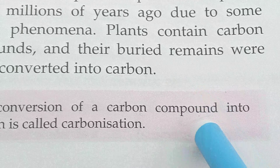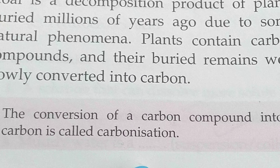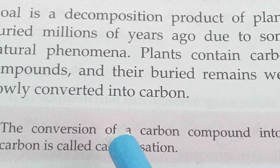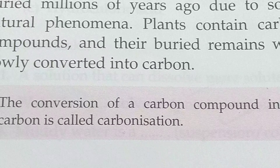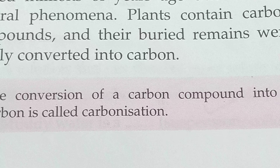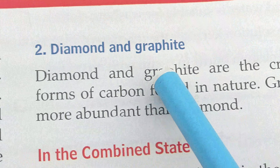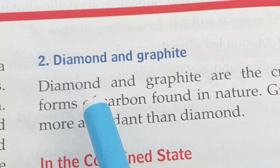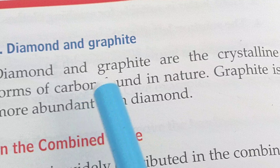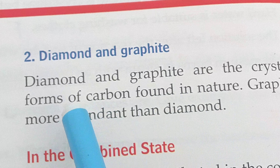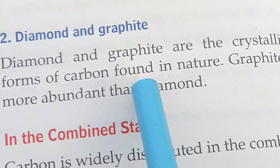The conversion of a carbon compound into carbon is called carbonization. Diamond and graphite are the crystalline forms of carbon found in nature — they are examples of the crystalline form of carbon. Graphite is more abundant than diamond.